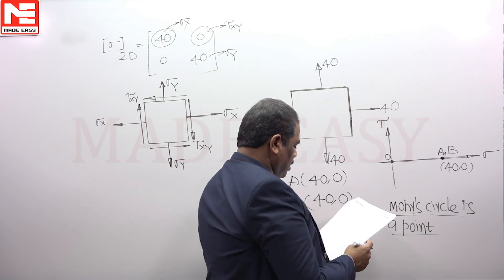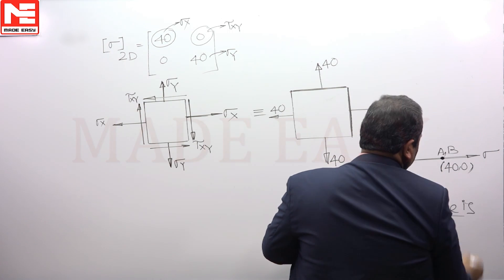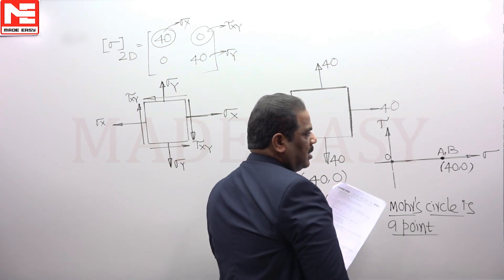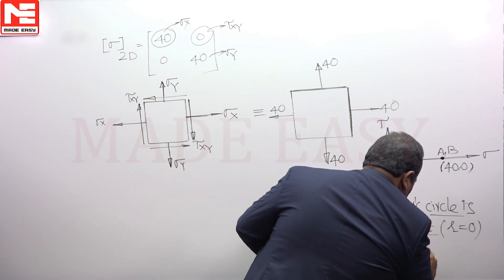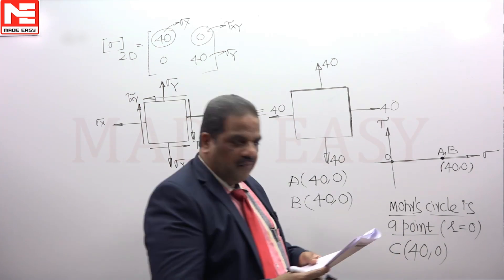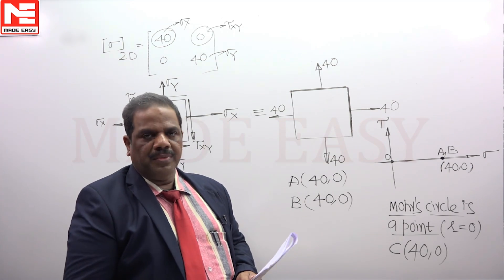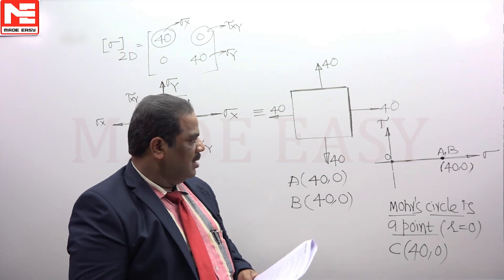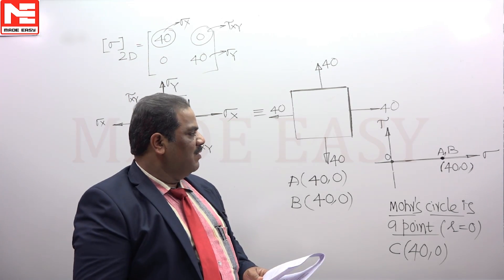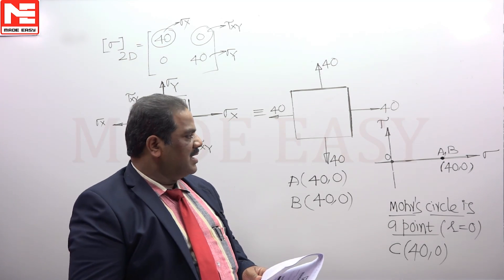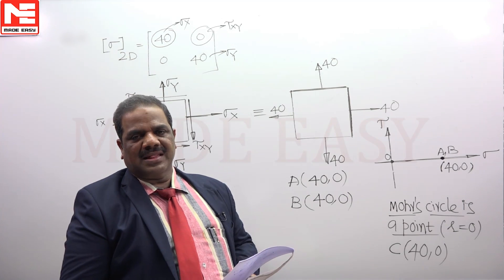As per the given options, the Mohr circle will be a circle with center coordinates of (40, 0) and a radius of 0. If the Mohr circle is a point, the radius will be 0 and the center coordinates will be (40, 0). Whenever sigma x and sigma y are equal and alike in nature and tau xy is 0, the Mohr circle becomes a point on the x-axis. Here, since sigma x and sigma y are both 40, the Mohr circle becomes a point at a distance of 40 from the origin, with center coordinates (40, 0) and radius 0.